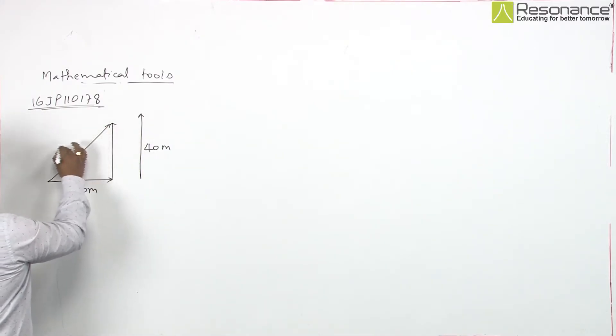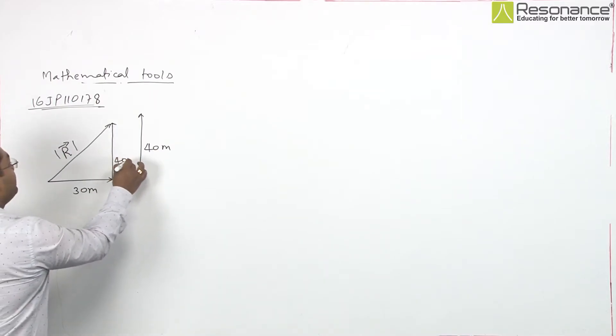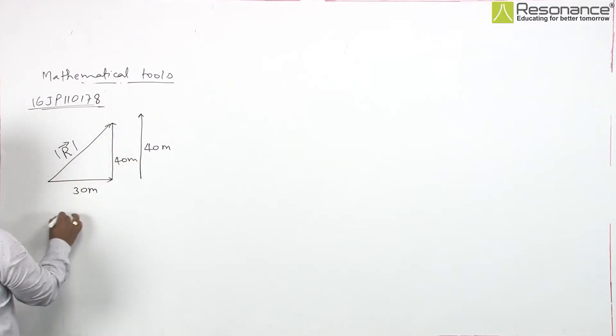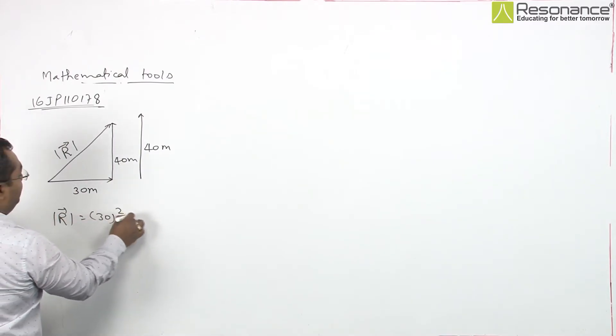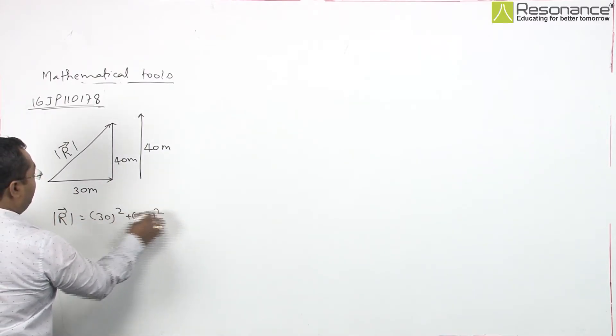So, that is our resultant R vector. For magnitude of this R vector, we can simply use Pythagoras. So, magnitude of R vector will be 30 square plus 40 square under root,